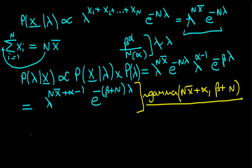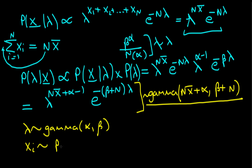So what we've proved here is that if we start off with a prior on lambda where lambda is gamma distributed with prior parameters alpha and beta, and we have a Poisson likelihood for each of our individual independent observations, then these two come together to produce a posterior which is itself gamma distributed. So what we've actually proved is that the gamma prior is conjugate to a Poisson likelihood function.